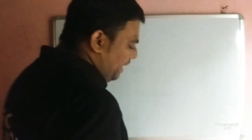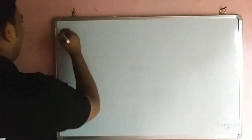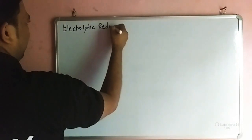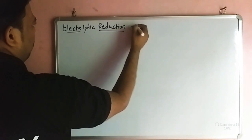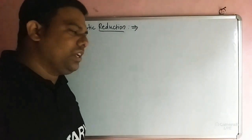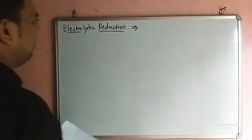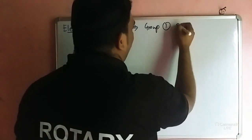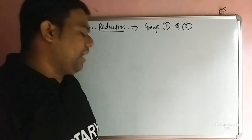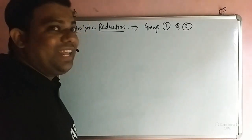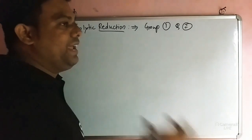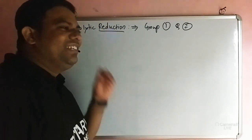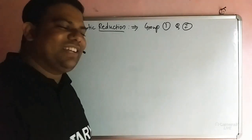Now we discuss electrolytic reduction. Electrolytic reduction is used for Group 1 and Group 2, that is alkali and alkaline earth metals. The process of extraction of metal by electrolysis is called electrometallurgy. 'Electro' means passing electricity; 'lysis' means breaking.